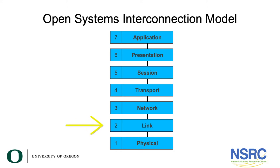Layer two is called the link layer or the data link layer and its job is to organize that stream of zeros and ones into frames — meaningful units of information. Those frames may also contain addressing information so that a frame can be received by one particular device but ignored by other devices, and it may also contain some error detection information.